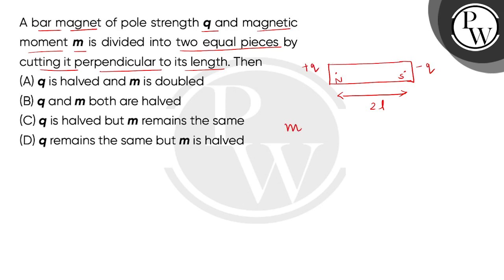Now, here we have magnetic moment expression, the pole strength multiplied by the magnetic length.